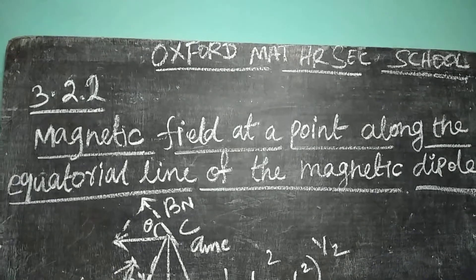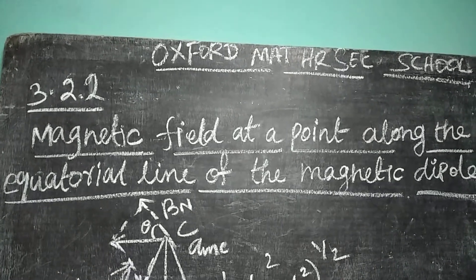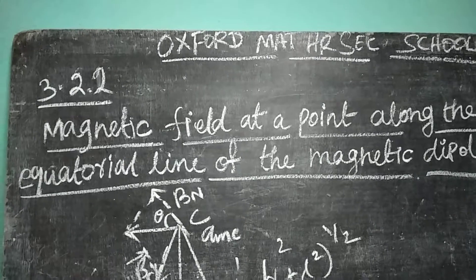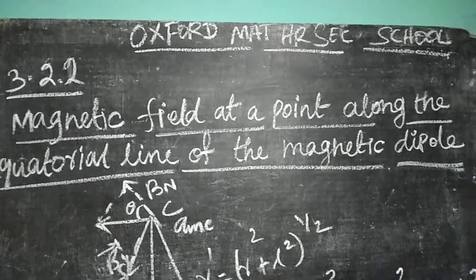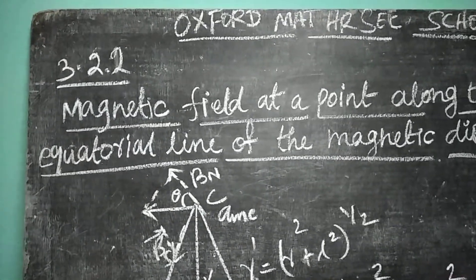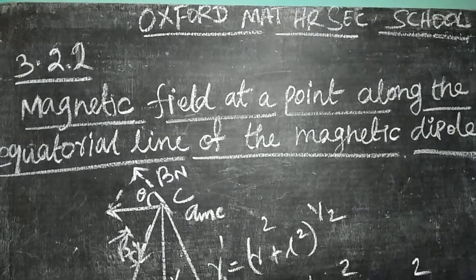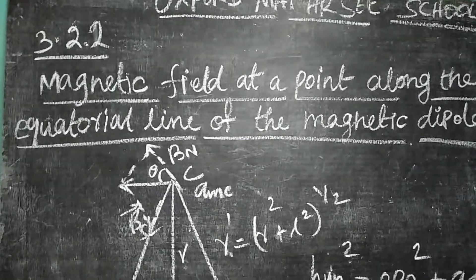Lesson 3, Content 3.2.2: To find the magnetic field at a point along the equatorial line of the bar magnet or magnetic dipole.